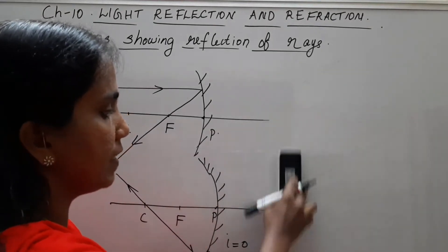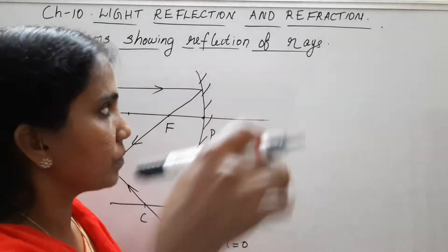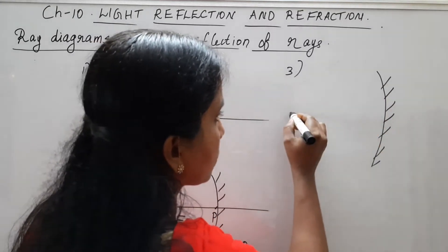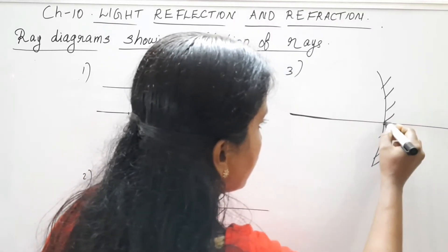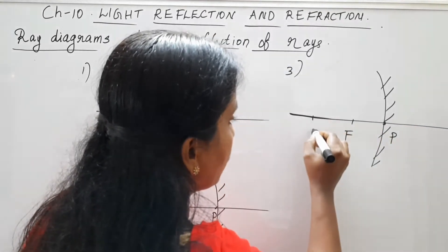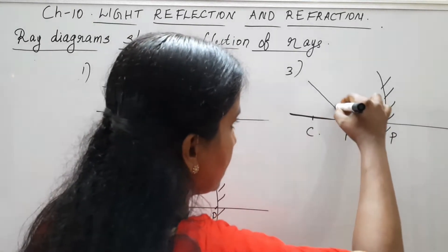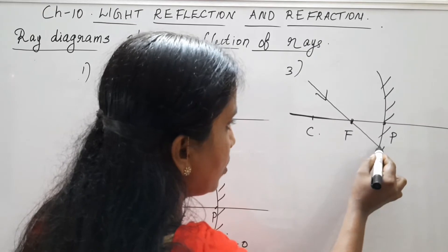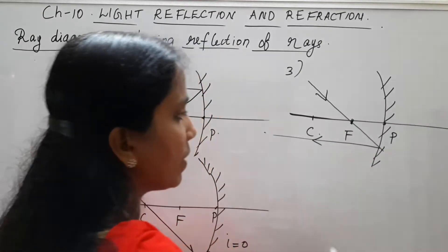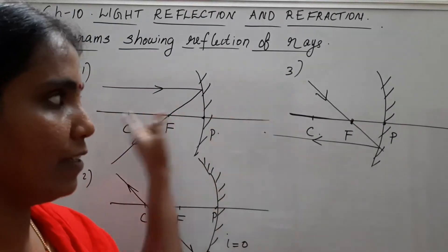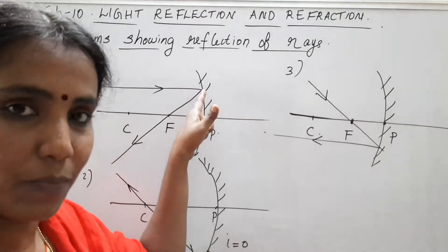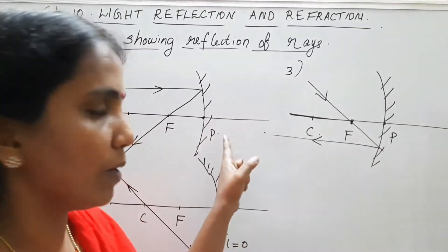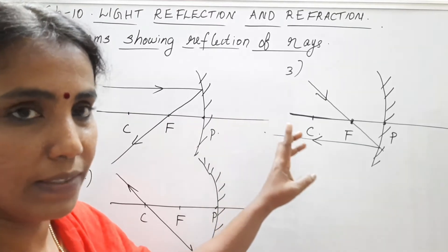The third case is when the incident ray passes through the focus. So we have the pole, focus, and center of curvature. The incident ray passes through the focus. In that case, the reflected ray will be parallel to the principal axis. Comparing these two cases: when the incident ray is parallel to the principal axis, the reflected ray passes through focus; and when the incident ray passes through focus, the reflected ray will be parallel to the principal axis.